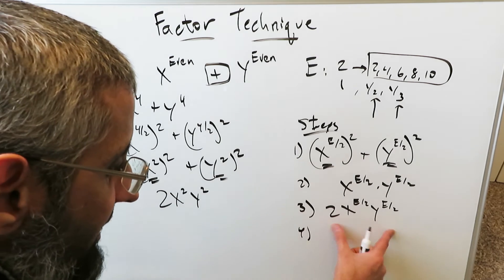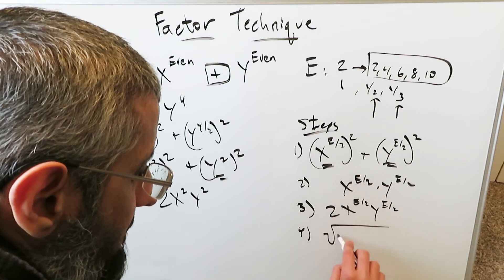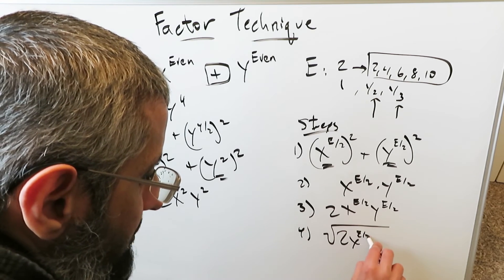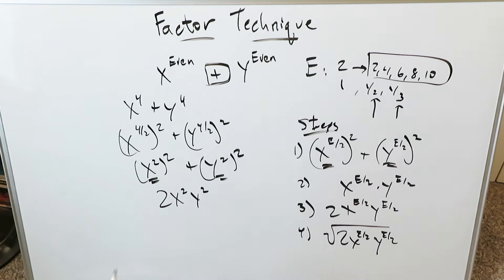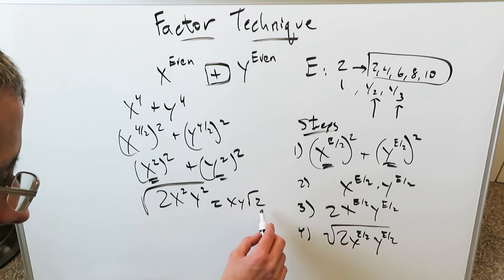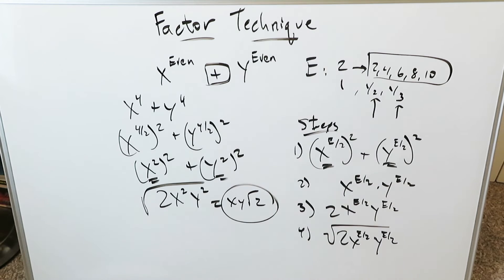Step number 4, this item right here must be brought into a square root. And the reason for that will become momentarily evident. Just bear with patience. I've done that. I'm going to do this. Sometimes you can simplify this and you can take these out as x, y, root 2. If you can simplify it, simplify it. And circle this term.